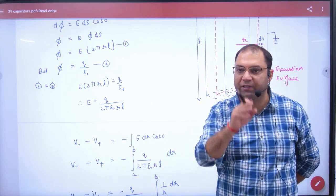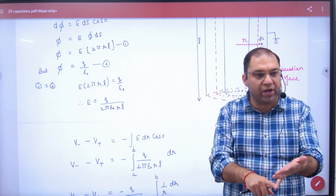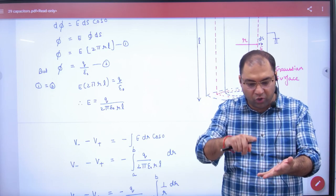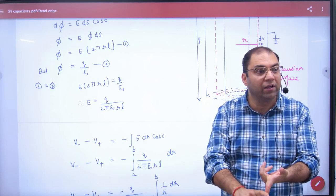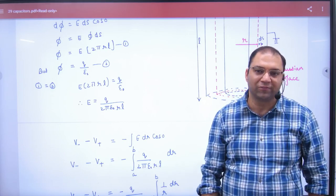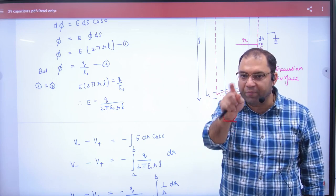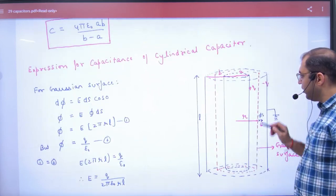Because in Gauss theorem, line charge, shell, solid sphere, sheet, cylinder, and this is the question of cylinder. So what should we put in Gauss theorem?